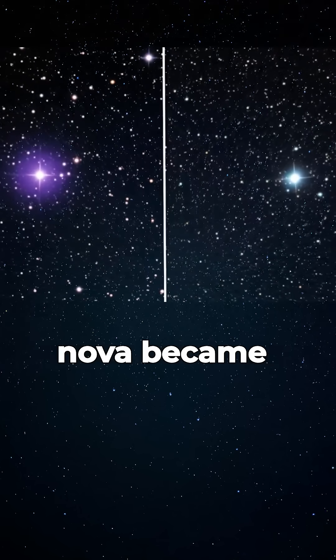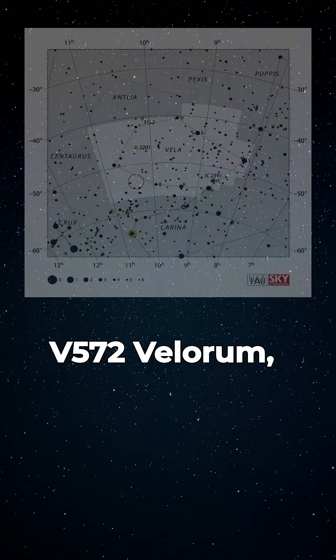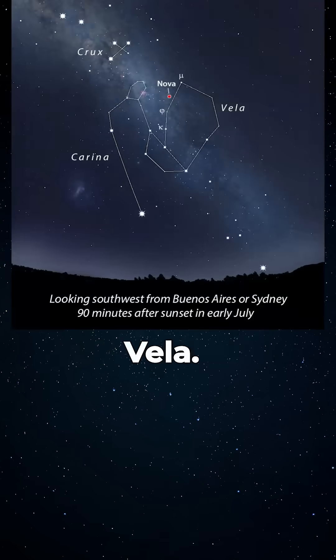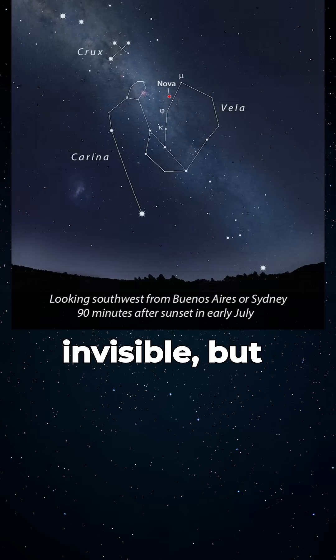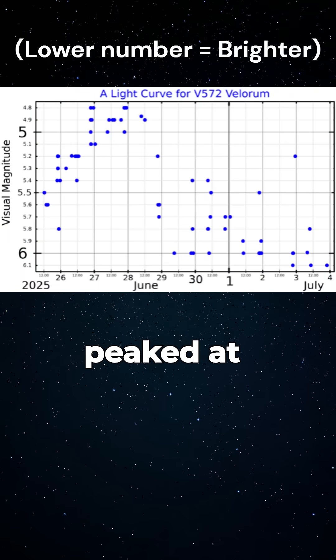This week, a second nova became visible, now designated V572 Velorum, as it's in the constellation Vela. It used to be practically invisible, but it became visible in late June and peaked at magnitude 4.8 on June 27th.